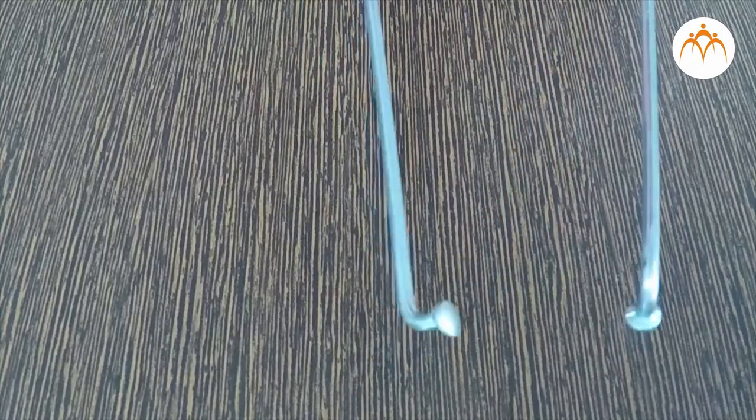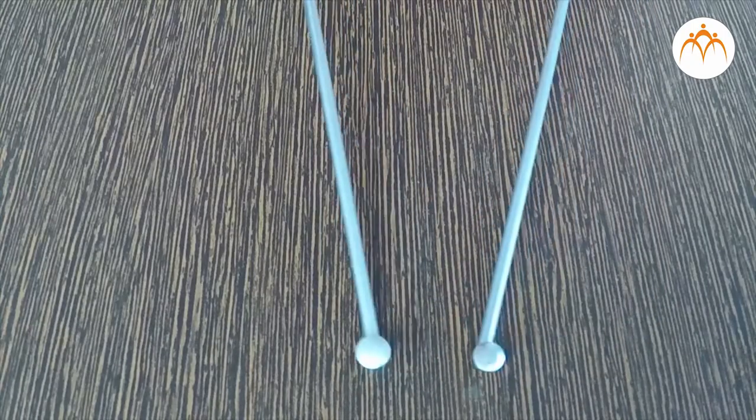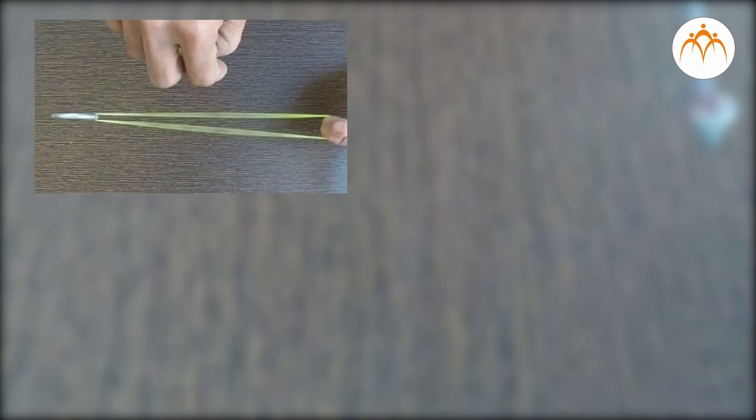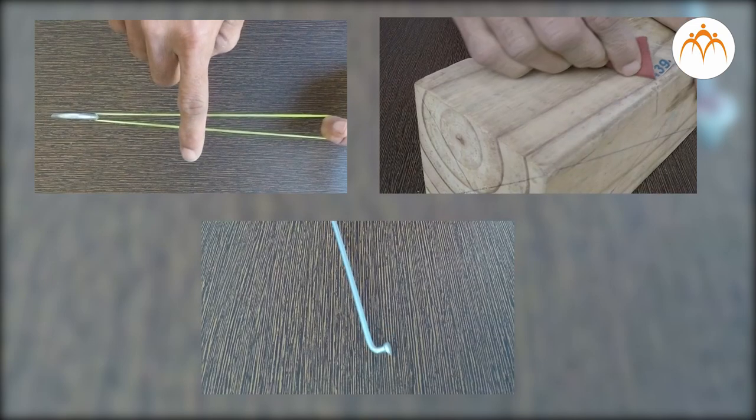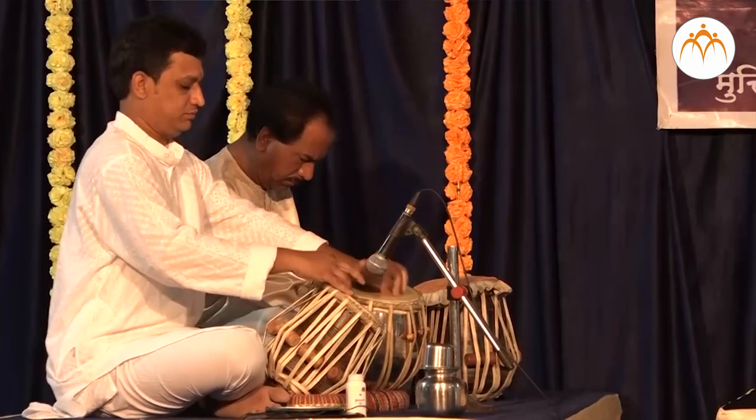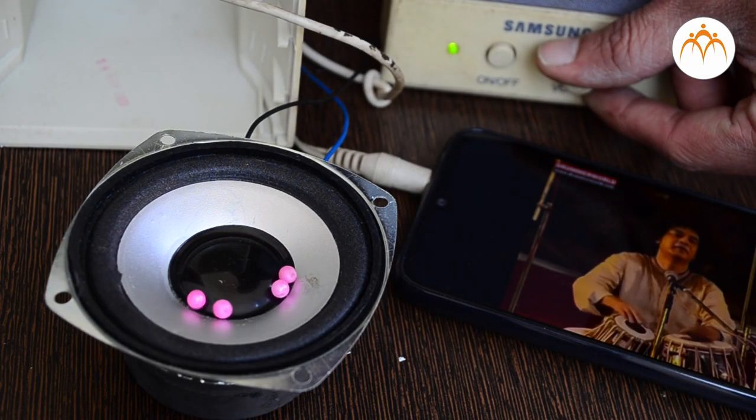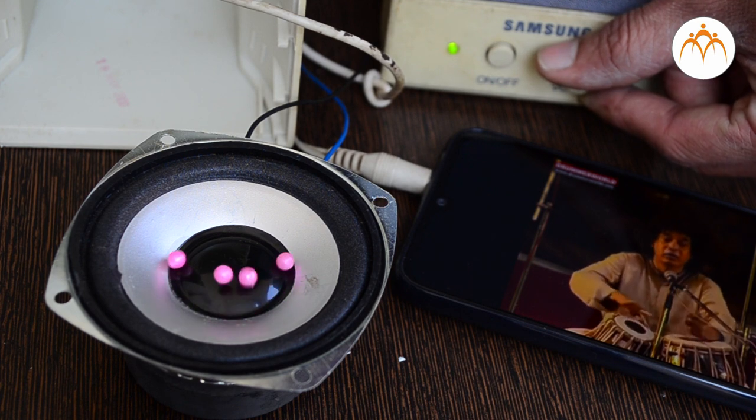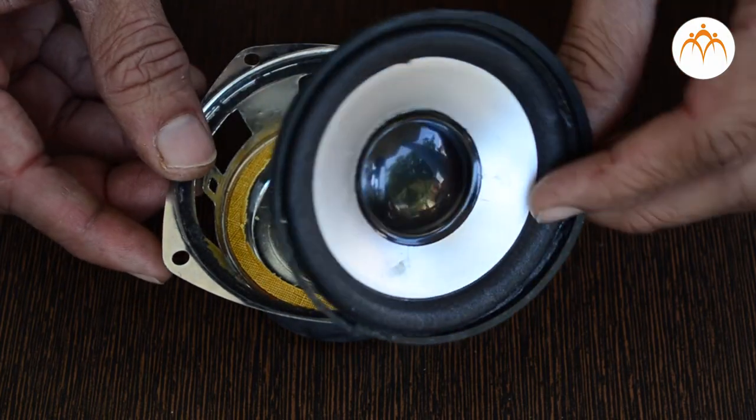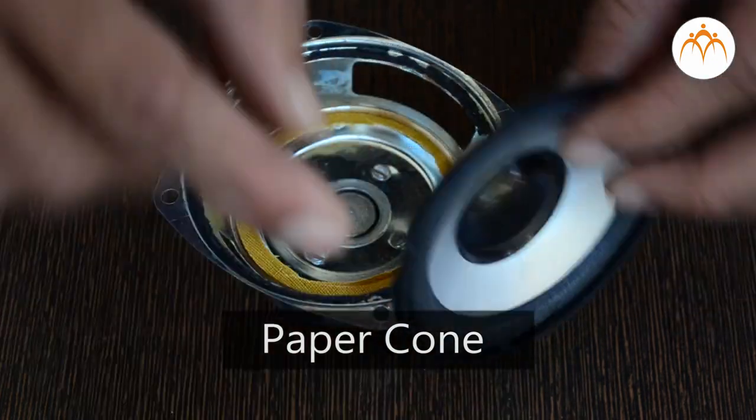In this activity you made a rubber band, sandpaper, and cycle spoke vibrate. Musical instruments make sound by vibrating in various ways. A loudspeaker turns electricity into sound - it has a paper cone inside that vibrates.